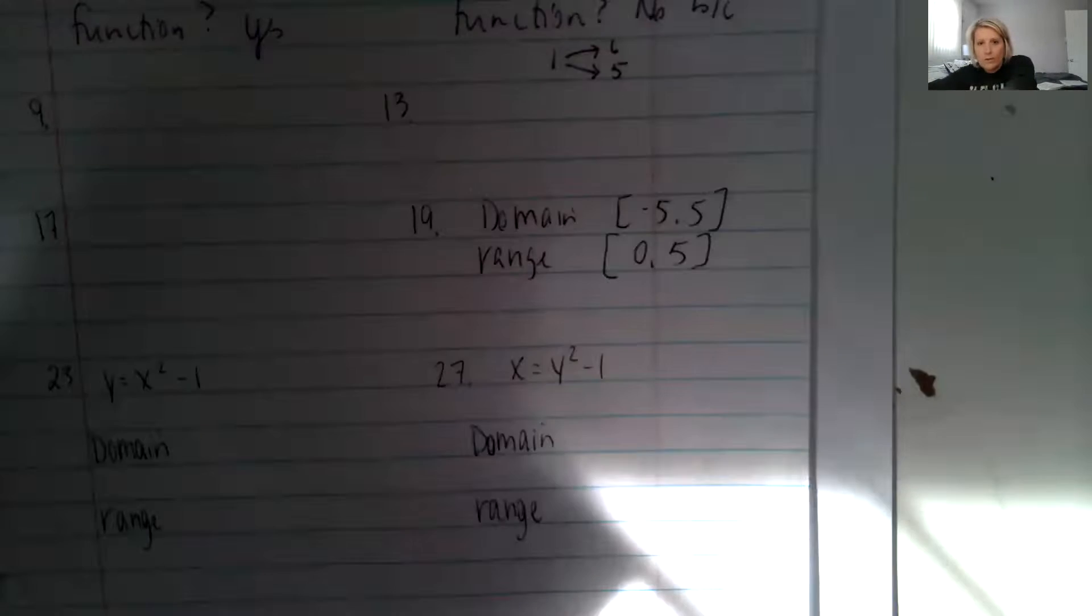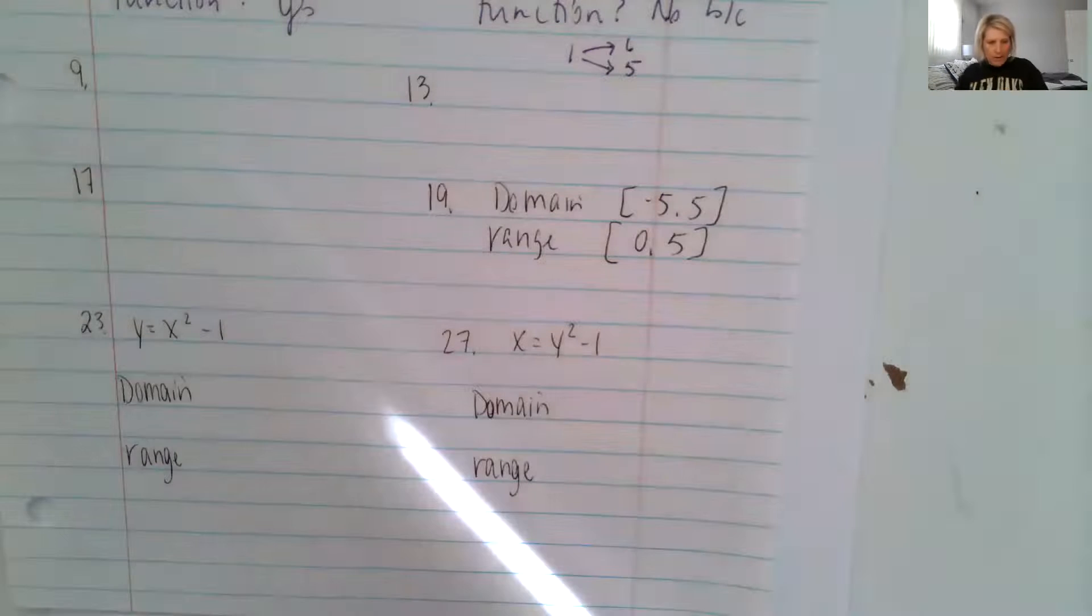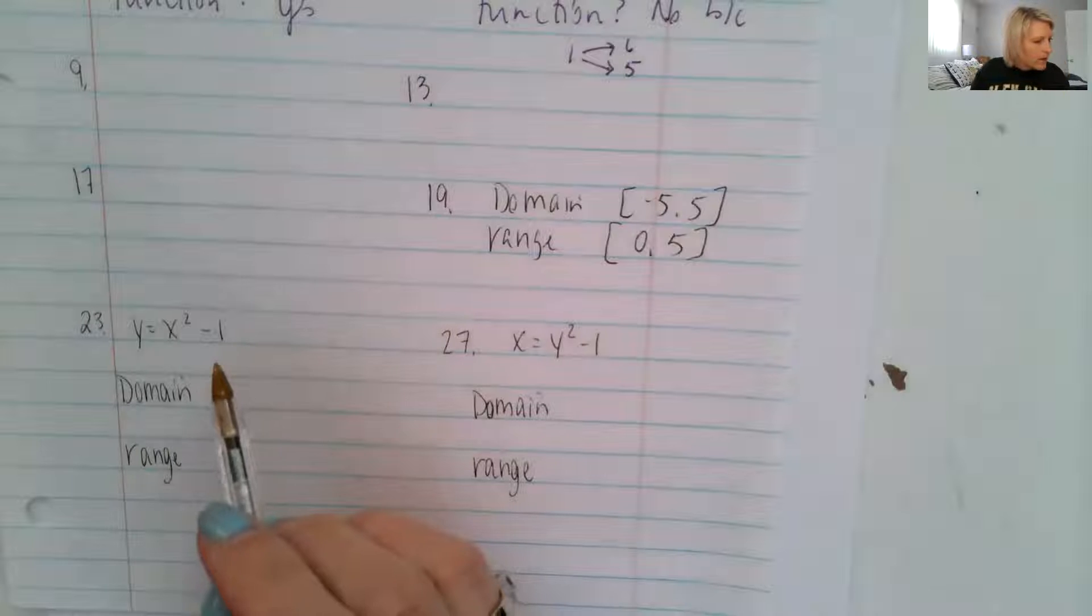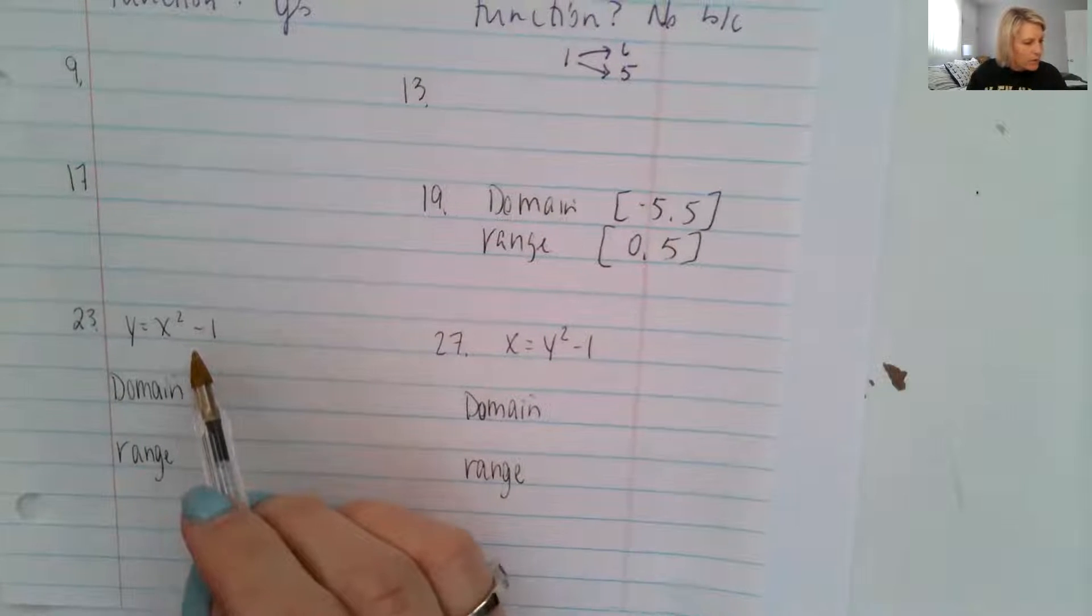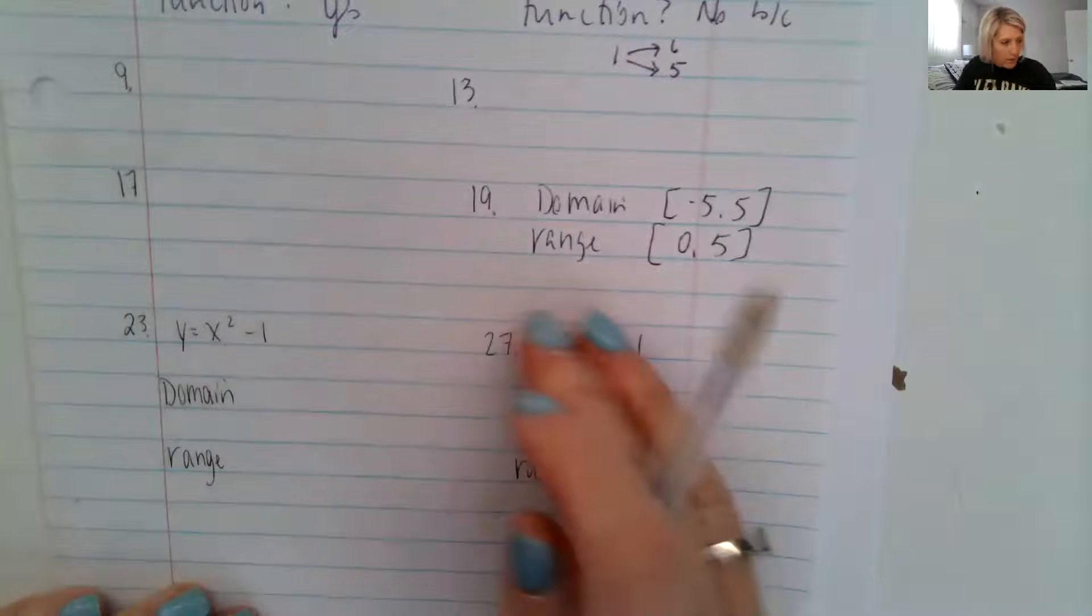So let's look at 23 and 27. They gave us symbolically y equals x squared minus one. And it says, graph each of the following in each case use the graph to find the domain and range and indicate whether the graph is the graph of a function. So we're going to use Desmos on both of these. And I'd like you to get practice using Desmos as well. So I'm going to go to Desmos here.